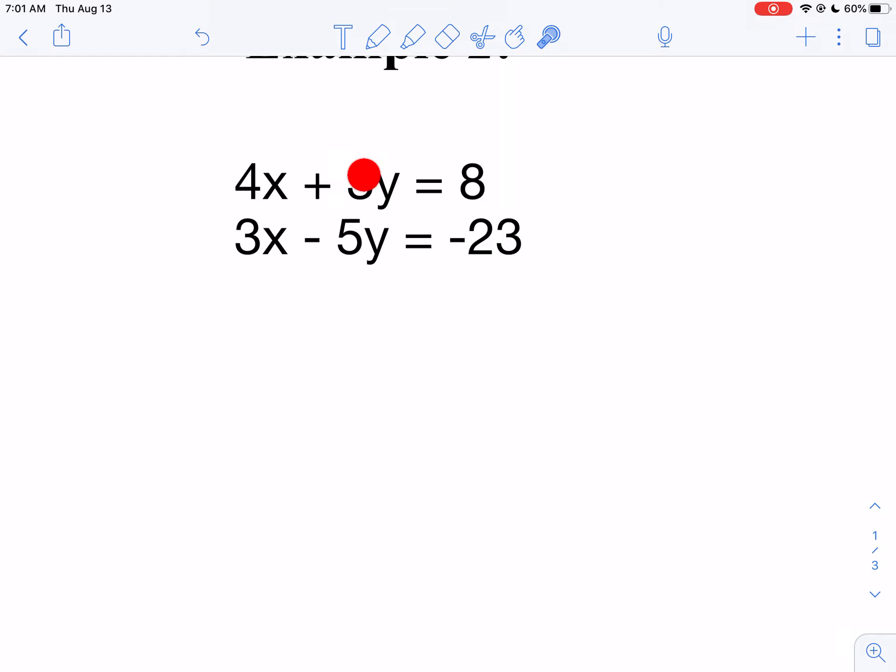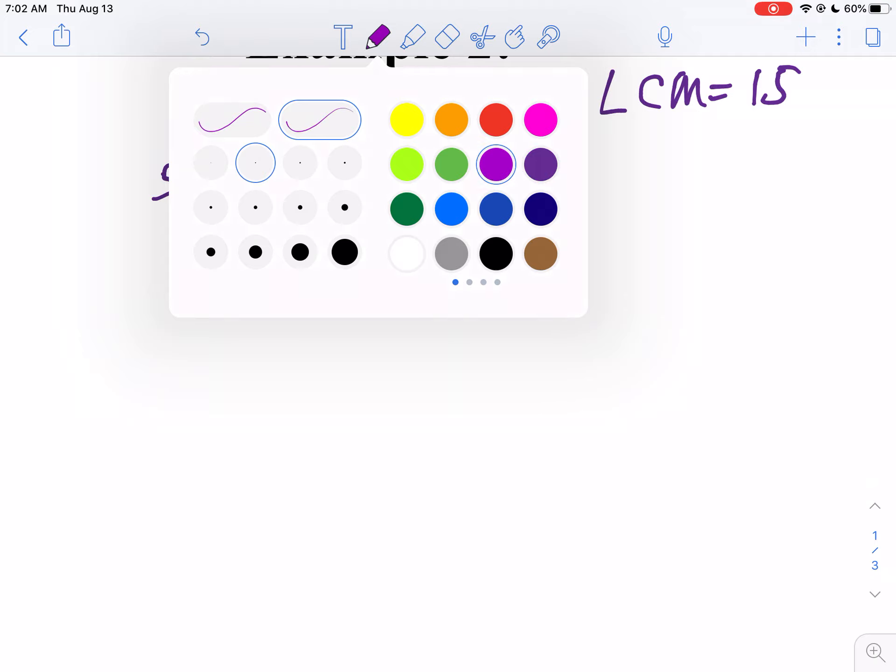Now I look at 5 and 3. What's the least common multiple? Not greatest common factor, least common multiple. What's the first thing that 3 and 5 go into? Well, we notice they're relatively prime. So my least common multiple is 15. What do you multiply 3 by to get 15? Well, you multiply 3 by 5. So I multiply the first equation by 5. What do you multiply 5 by to get 15? Well, I'm going to multiply the second equation by 3.